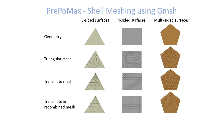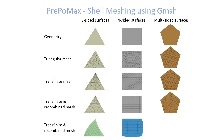Unfortunately, it doesn't work for multi-sided surfaces, where the mesh is recombined and we find mostly quadrilateral and also triangular elements. These possibilities are not limited only to straight-edged surfaces — the surfaces can also be curved in space and have curved edges.